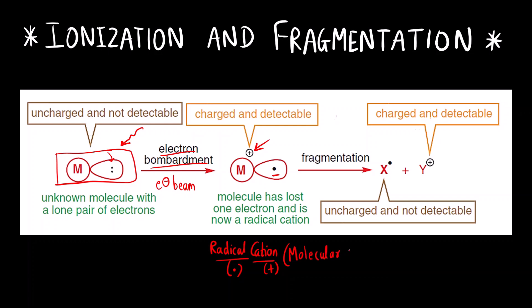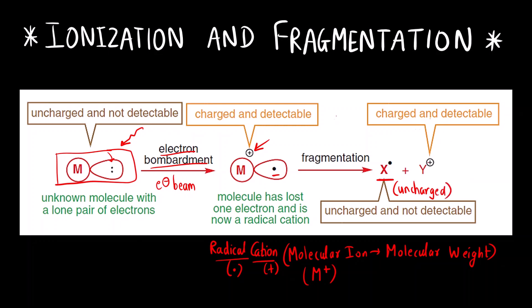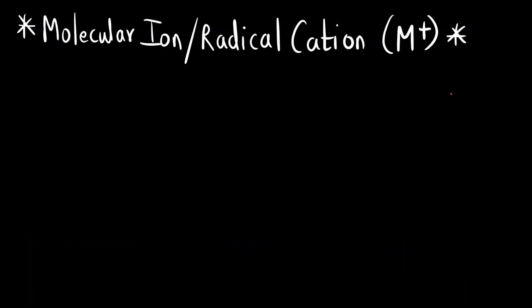This same species is known as the molecular ion. The molecular ion represents or gives information about the molecular weight of the compound, because the entire carbon chain is intact — only one electron has been removed — so the mass is the same as the molecular weight. It is represented by M⁺. After formation of the molecular ion, there is fragmentation, giving one uncharged radical (not detectable) and one carbocation (a charged fragment), also called a fragment ion.